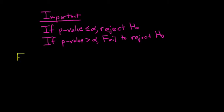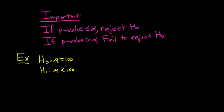Let's say we're doing a hypothesis test and our null hypothesis is that the population mean is equal to 100, and our alternative hypothesis is that the population mean is less than 100. Let's further suppose that our alpha in this problem is 5%, so 0.05, and that our p-value in this problem is 0.023.